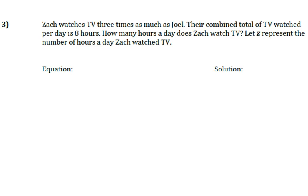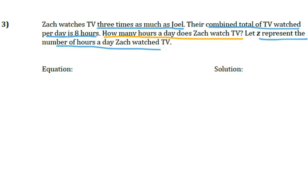Number 3. Zach watches TV three times as much as Joel. Their combined total of TV watched per day is eight hours. How many hours a day does Zach watch TV? Let Z represent the number of hours that Zach watches TV. The question is: how many hours a day does Zach watch TV? So we're only concerned about Zach, but we're going to have to use Joel to help us. Total is eight, and Z represents the number of hours a day Zach watched TV.